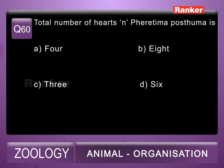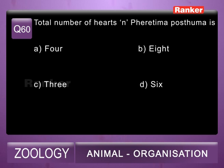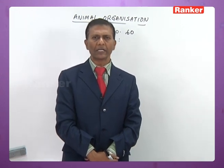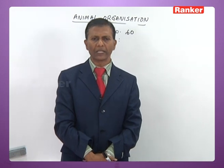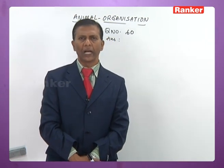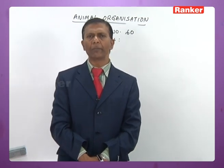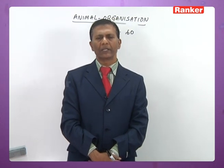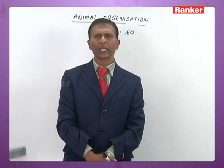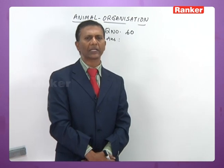Question 60: total number of hearts in Pheretima posthuma — A) 4, B) 8, C) 3, D) 6. Pheretima posthuma has four pairs of lateral hearts present in the 7th, 9th, 12th, and 13th segments. The first two pairs (7th and 9th) are called lateral hearts and carry blood from the dorsal to the ventral blood vessel. The 12th and 13th pairs are called lateral esophageal hearts and also collect blood from the supra-esophageal vessel. Altogether there are eight lateral hearts.